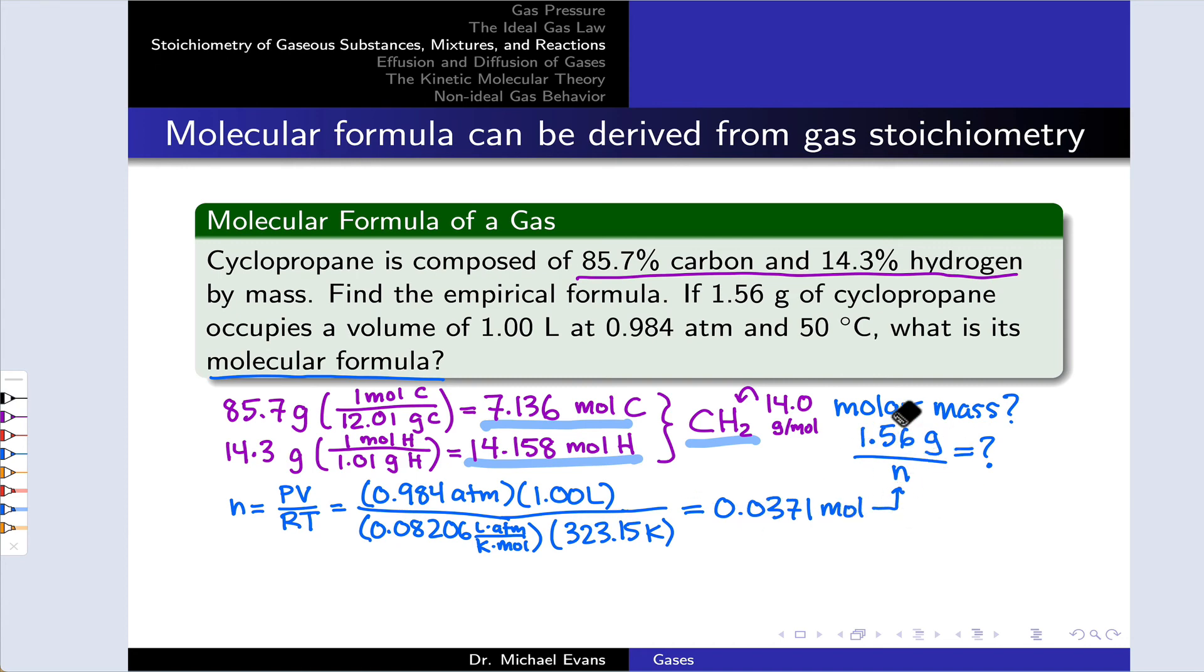That goes into the denominator of this molar mass, and the result is 42 grams per mole. Let's compare the molar mass of CH2 with the molar mass of 42 grams per mole that we just deduced. This is three times the molar mass of CH2. So we're going to take that CH2 and multiply by three to get the molecular formula C3H6.